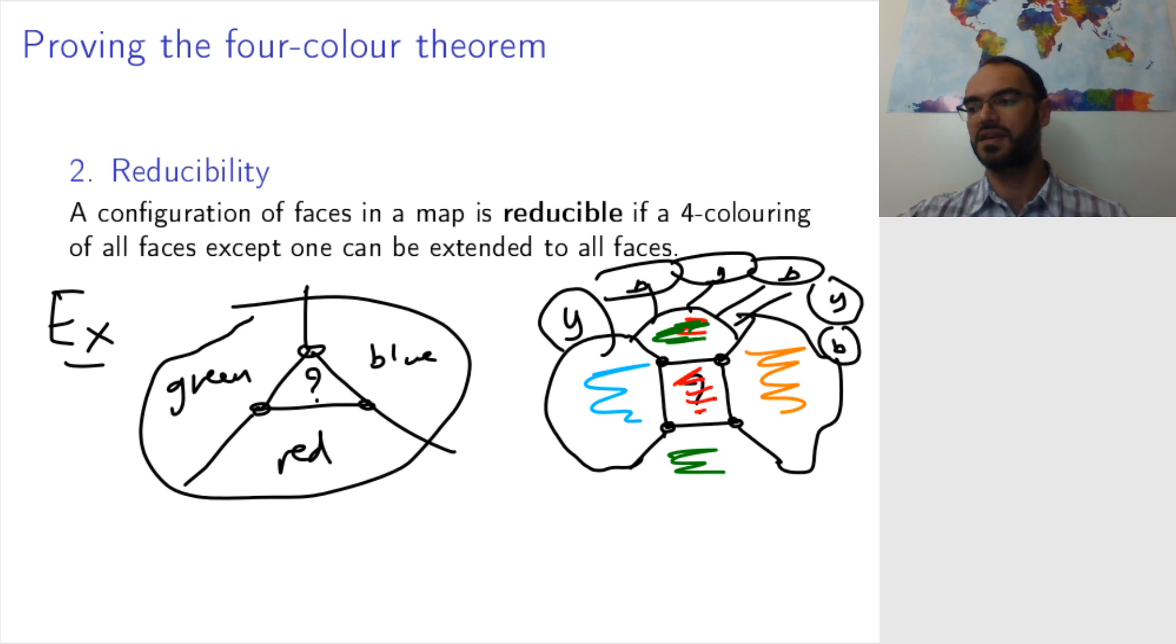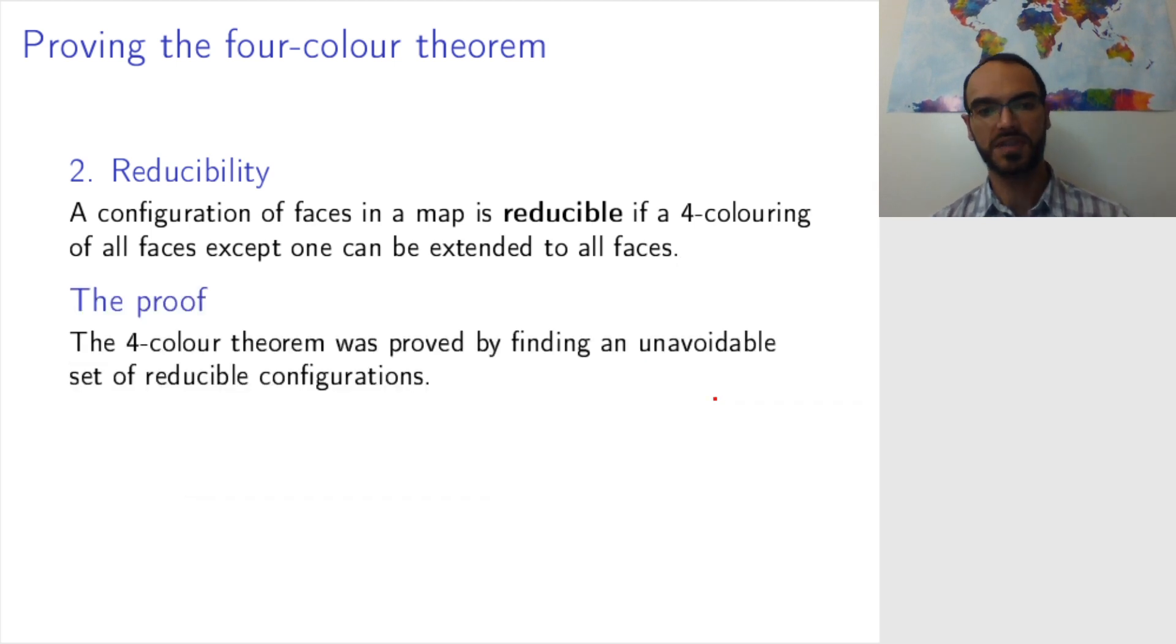So this was a cool trick, but that's just to give you an idea that it's not just the obvious faces that are reducible. So how did people prove this four color theorem?